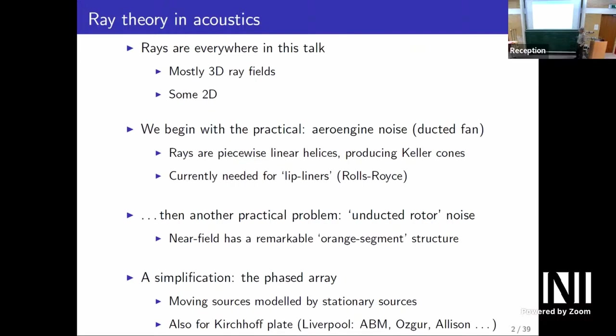After the duct problem, I'm going to look at a simpler-looking problem where you take away the duct — normally called the open rotor problem. The duct problem is essentially 2D, but as soon as you take away the duct and go to the open rotor, it's fully 3D. I'm going to describe two computations I did originally whose results definitely took me by surprise. In the unducted rotor problem, I solved it numerically by considering the whole fan, then simplified it by restricting the sources to a ring, which reduces the dimension.